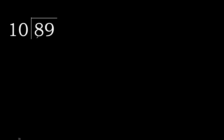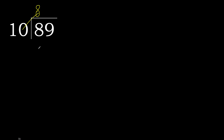89 divided by 10. 8 is less, therefore next. 89 is not less, therefore with 89 and 10, multiply by which number is nearest to 89 but not greater. 10 multiply by 9 is 90 — is greater. Multiply by 8: 80 — is not greater.